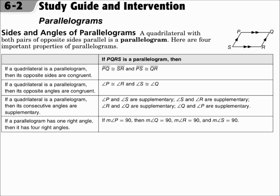A quadrilateral with both pairs of opposite sides parallel is a parallelogram. Here are four important properties of parallelograms: opposite sides are congruent, opposite angles are congruent, consecutive angles are supplementary, and if it has one right angle, then it has four right angles. Keep track of all the properties and use those as we work the problems out.